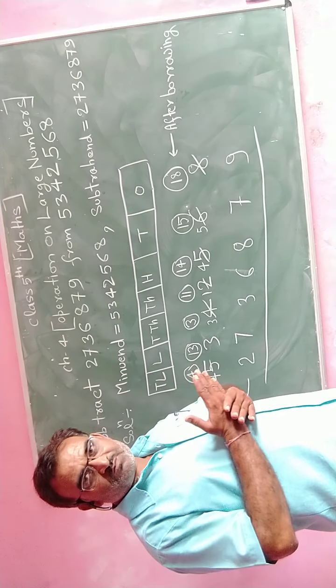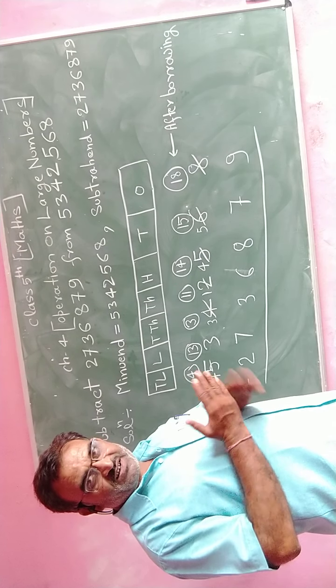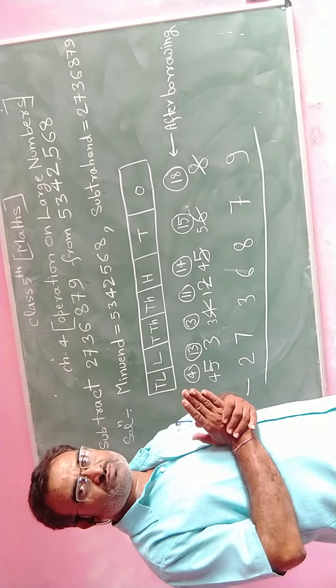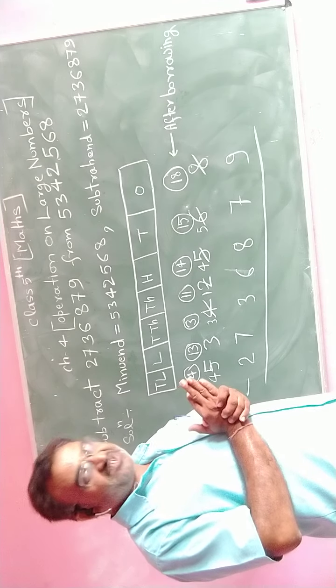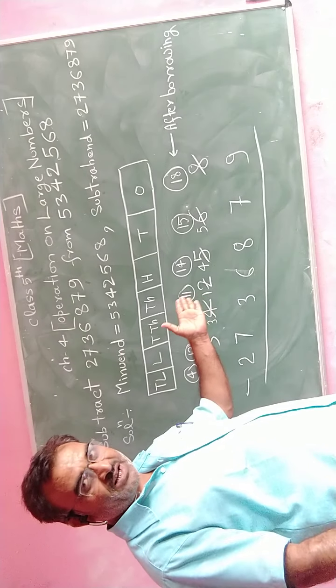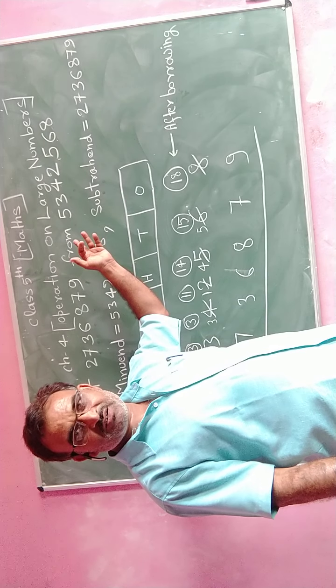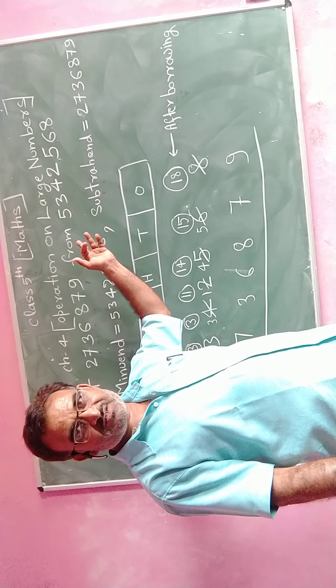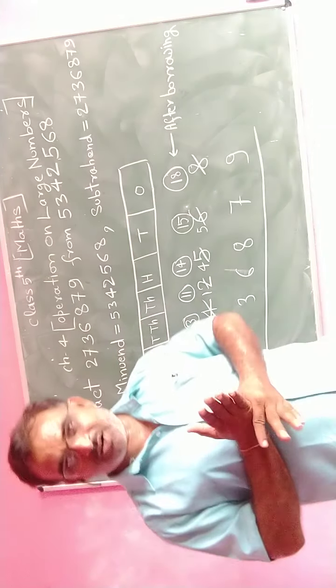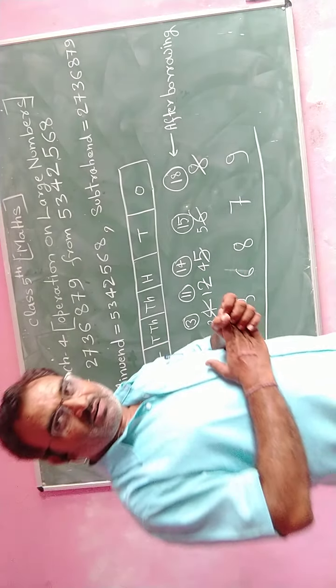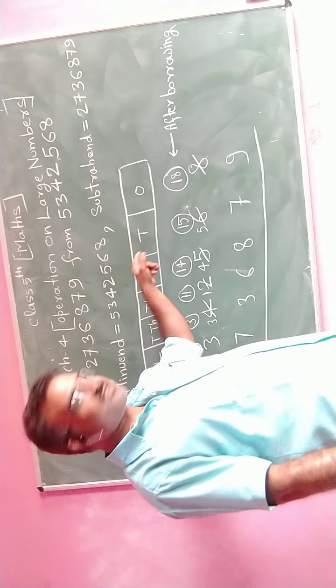Please arrange these two numbers according to the Indian place value system, making the proper digits. With the help of this paper, we see there is a maximum of seven digits in both large numbers, either subtrahend or minuend. So we have to make a chart according to Indian place value of seven digits.